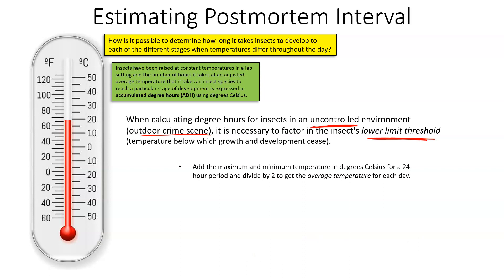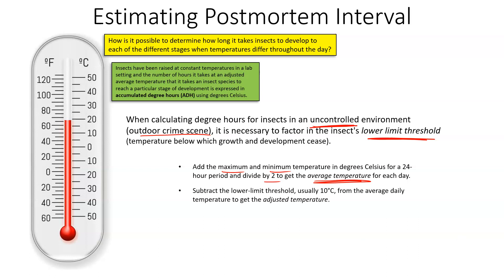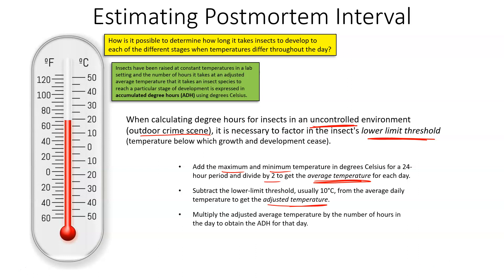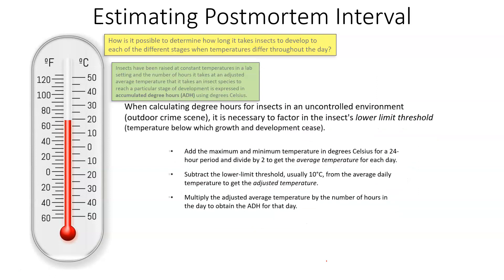When calculating degree hours for insects in an uncontrolled outdoor environment, it is necessary to factor in the insect's lower limit threshold — the temperature below which growth and development cease, which is often 10 degrees Celsius. We add the maximum and minimum temperatures in degrees Celsius for a 24-hour period, then divide by two to get the average temperature for the day. For example, if the high is 20 degrees and the low is 10 degrees, the average would be 15 degrees. We subtract the lower limit threshold of 10 degrees Celsius from the average daily temperature to get the adjusted temperature, then multiply the adjusted average temperature by the number of hours in the day to obtain the ADH for that day.